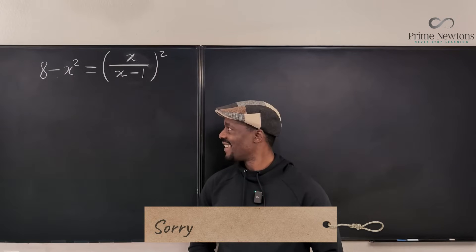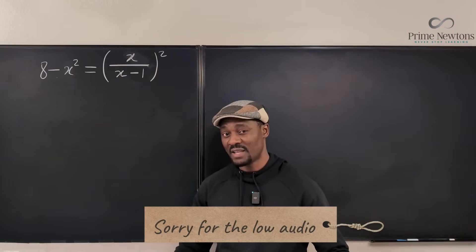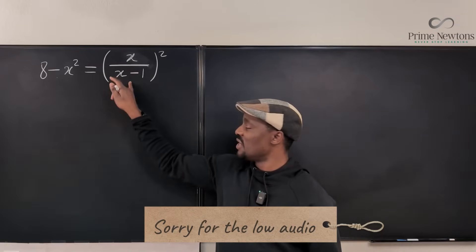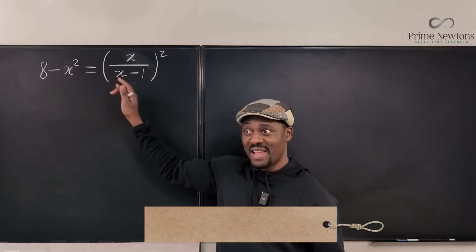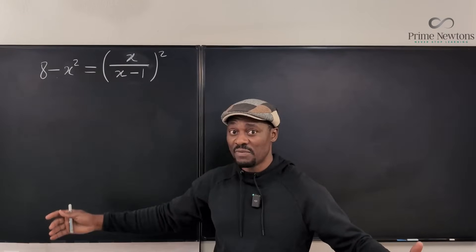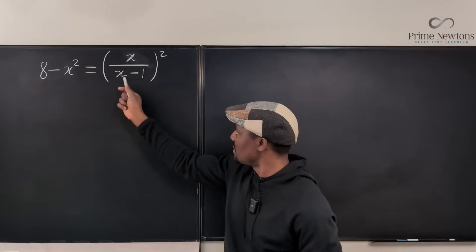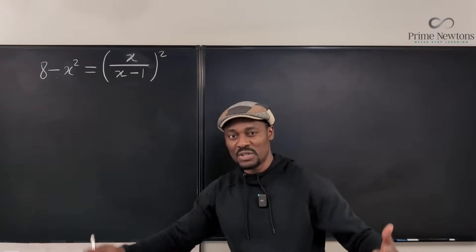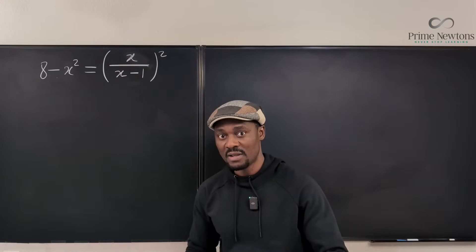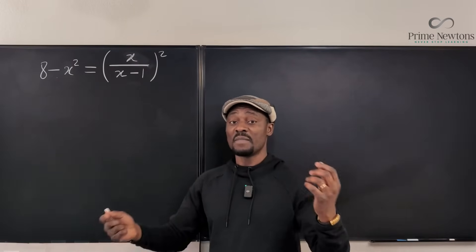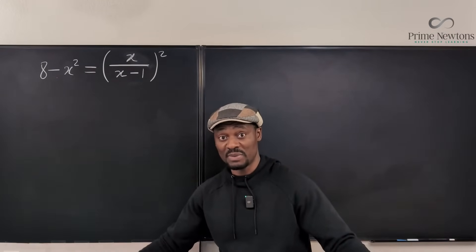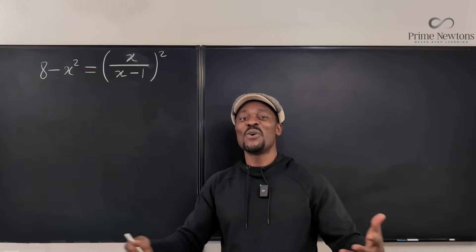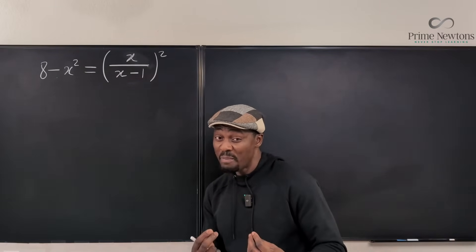Welcome to another video. Looking at this problem, the first time I said I would just square the right-hand side, multiply everything by the denominator and get a giant polynomial of degree 4. I know it's going to be fourth degree because this becomes x squared after squaring, and multiplying gives x squared times x squared. I know I'm supposed to get four answers. But when I started solving it, I found another way — a more magical way — and that's the way I want to take you.